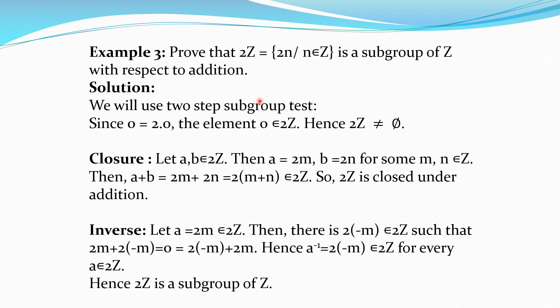Now some examples with an infinite group. Prove that 2Z = {2n | n ∈ Z} is a subgroup of Z with respect to addition. We cannot apply the finite subgroup test because 2Z is an infinite set. What is 2Z? It is 2 multiplied by n where n is in Z — that is, multiplying all integers by 2. So Z contains 0, 1, 2, 3, ... and -1, -2, -3, ...